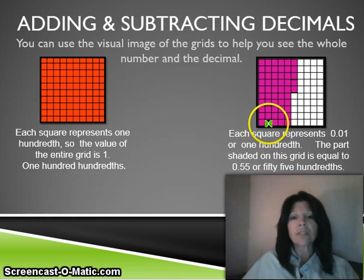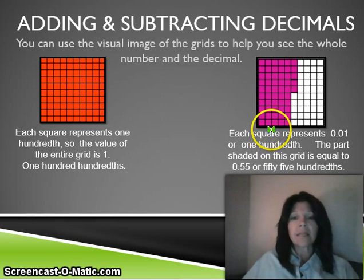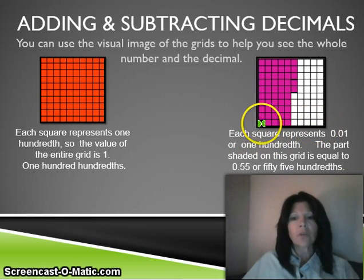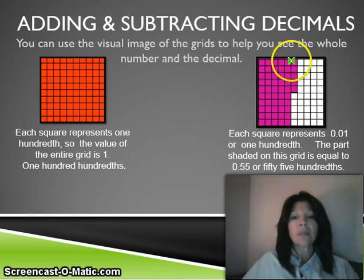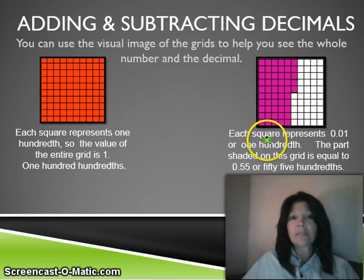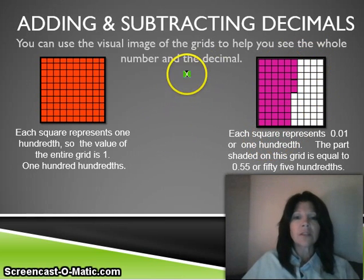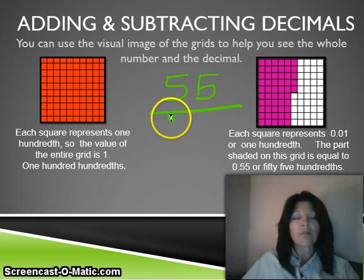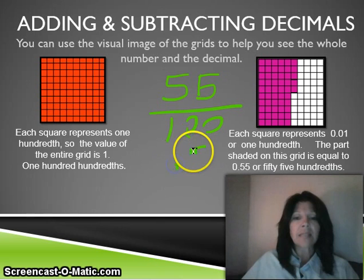Instead of counting every single one, each row equals ten — it's a ten-by-ten grid, so ten down and ten across. You can count ten, twenty, thirty, forty, fifty, then you have five more here, so it's fifty-five hundredths. Fifty-five out of one hundred are shaded in, which is the same as fifty-five hundredths.